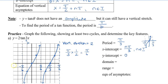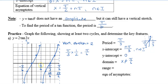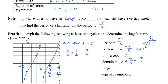Our domain is all real numbers except where there is an asymptote. The first asymptote occurs at pi over 6, so x cannot be pi over 6. The next asymptote occurs at every pi over 3. We can convert to a common denominator: pi over 6 to 3 pi over 6 is a distance of 2 pi over 6, which is pi over 3. So we start at pi over 6 for our first asymptote, and each subsequent asymptote is pi over 3 away, giving us pi over 6 plus n times pi over 3, where n is an integer.